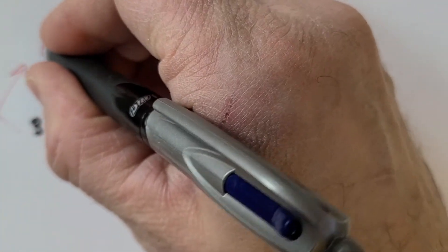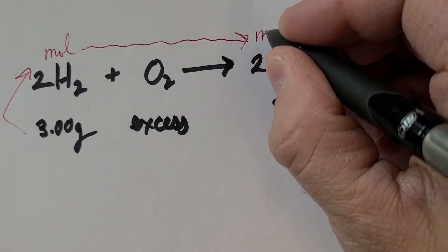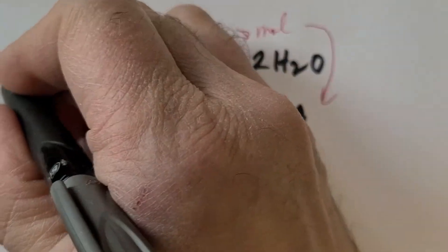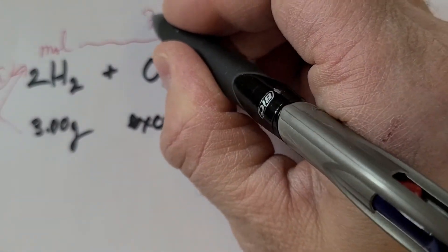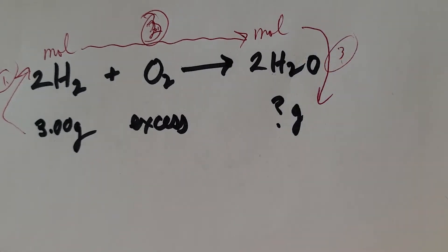So what we have to do is we have to convert this into moles and then use that mole ratio and then convert back to grams. So it's basically a three step process here.